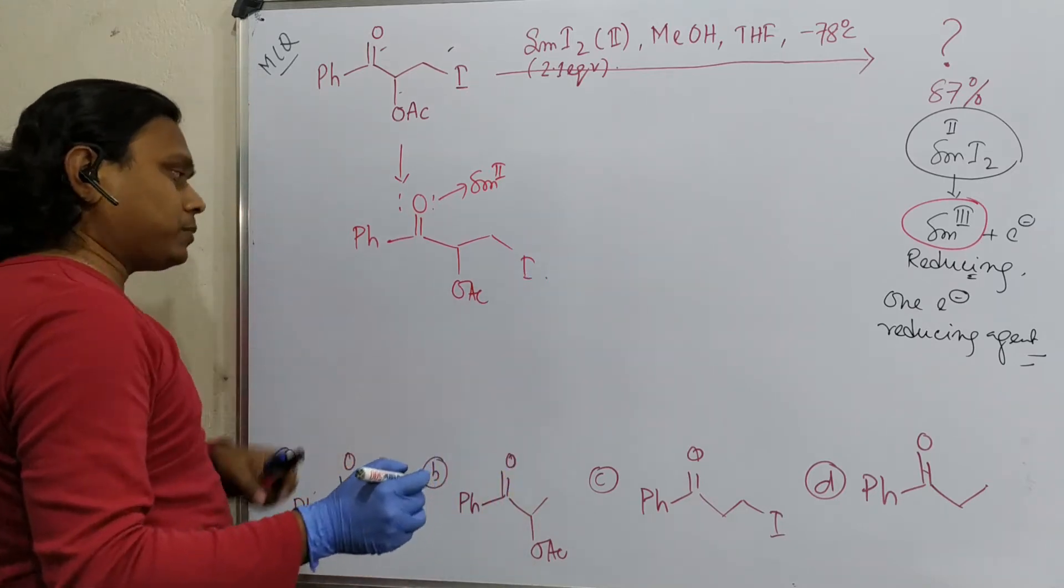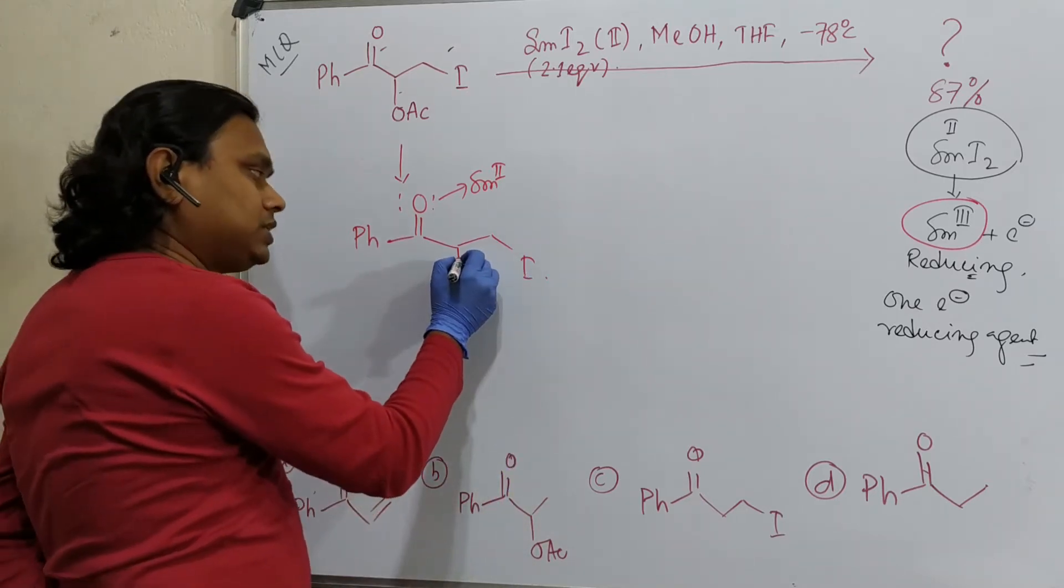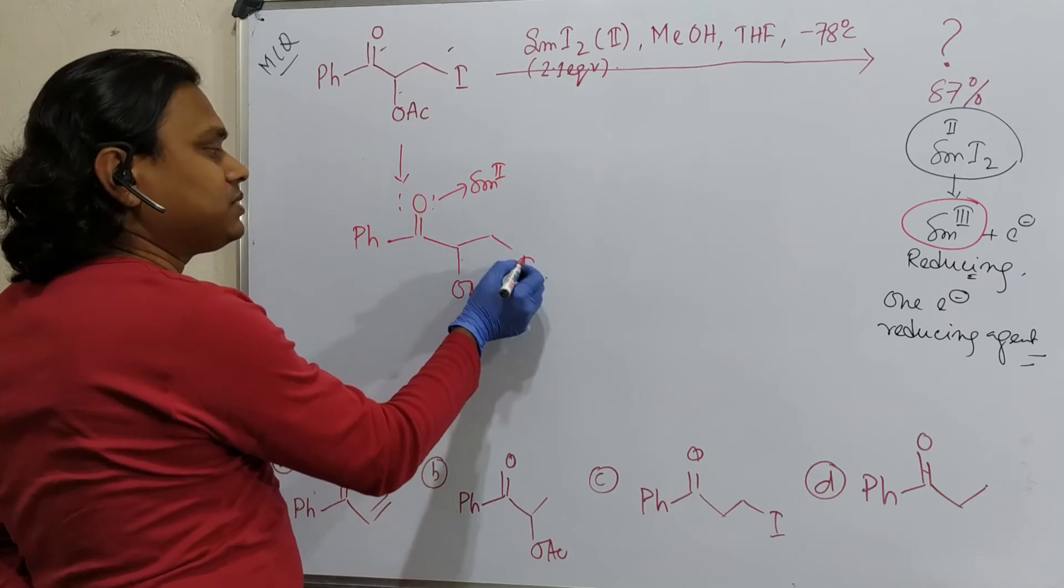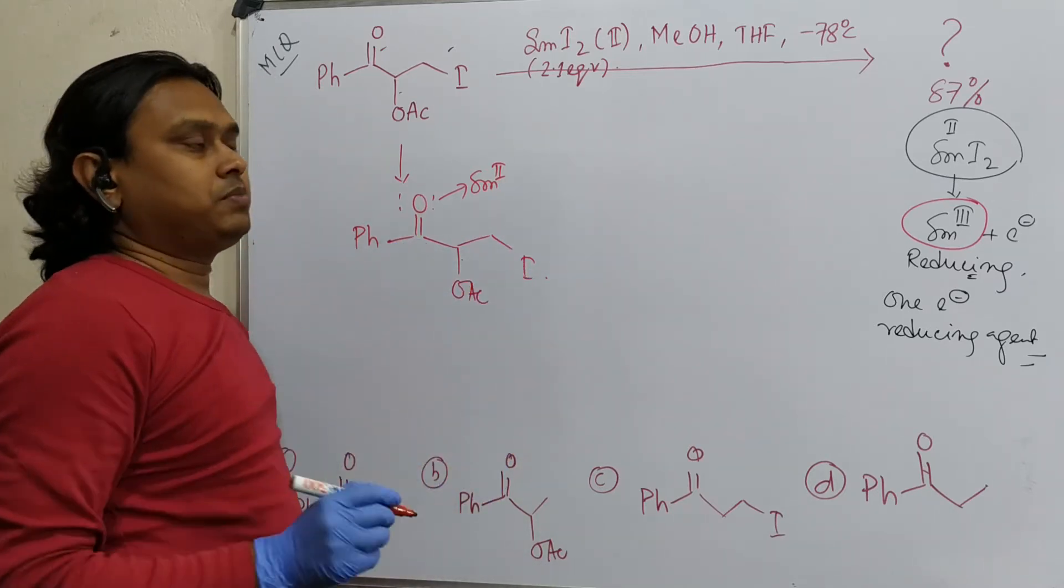See, in this case, three types of options possible. First of all, this is sigma star of this O-C, sigma star of C-I and pi star of carbonyl. Remember, when there is alpha to this leaving group,